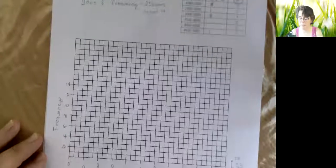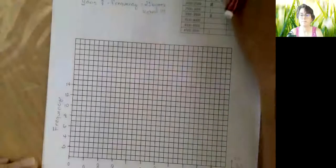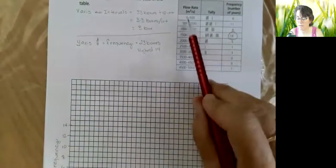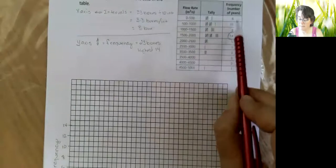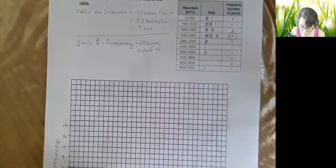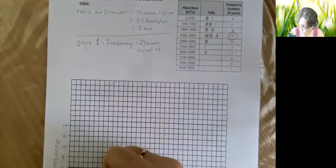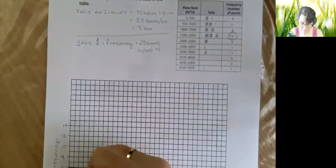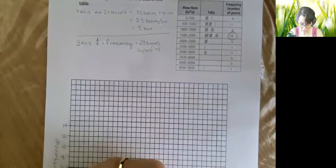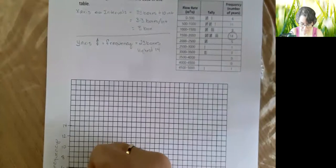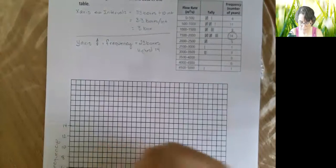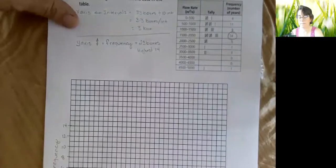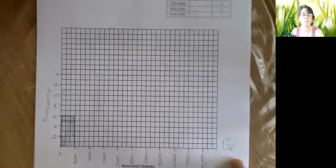So now we have to transfer information. From zero flow rate to 500 meters cubed per second, that happens six years. So all I do is I find the six and I find that. And you can color in the box, you can use your highlighter, you can use pencil crayons. Now you can see that's it.